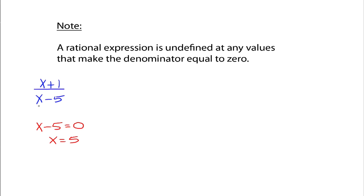I'm sure you saw that 5 makes the denominator equal to 0 right off the bat, but the idea is: take the denominator, set it equal to 0, solve for x, and the numbers you get are the values that make your rational expression undefined. In this case, 5 is the only number that makes it undefined. All the other real numbers are okay.